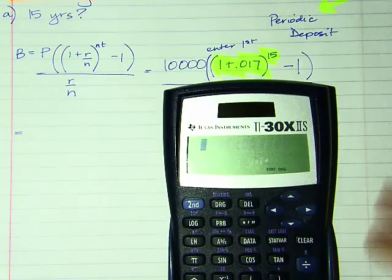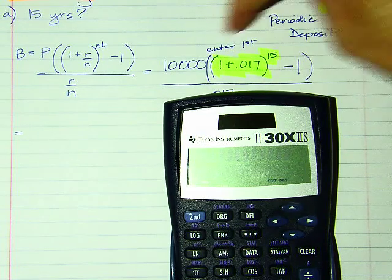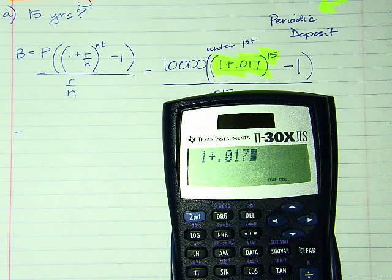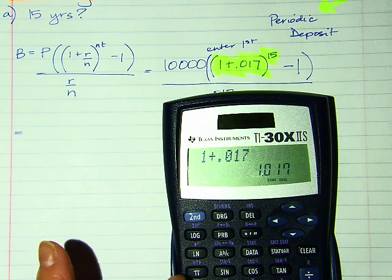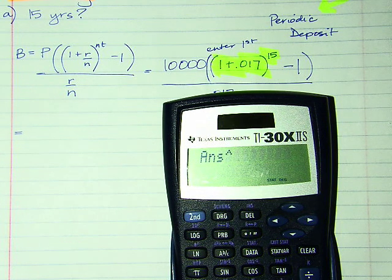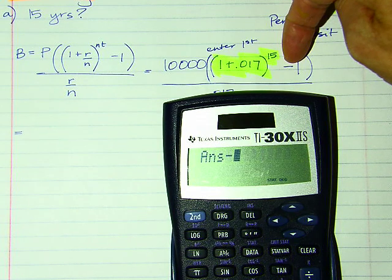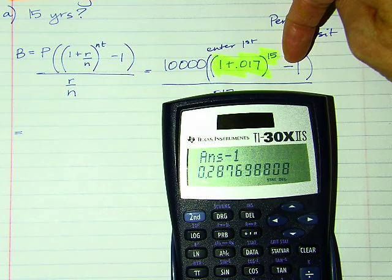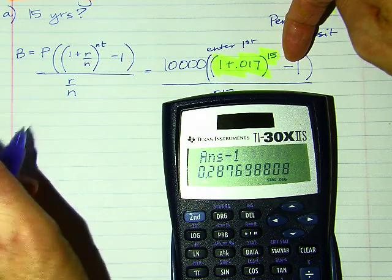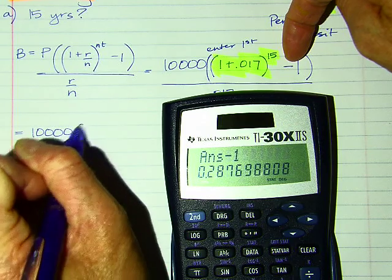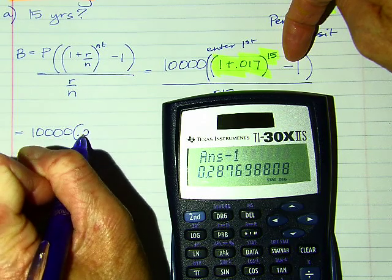So let me do this in steps. First: (1 + 0.017)^15, then subtract 1. I'm going to keep as many decimals as possible — I get approximately 0.2877.